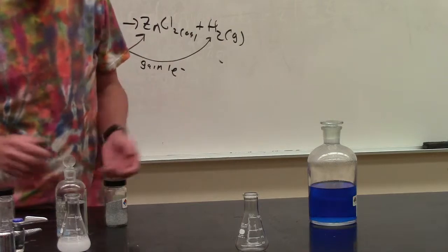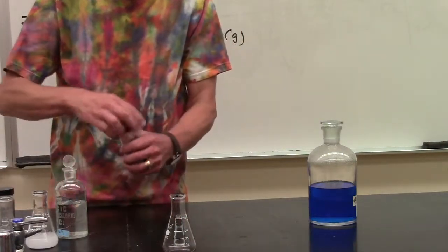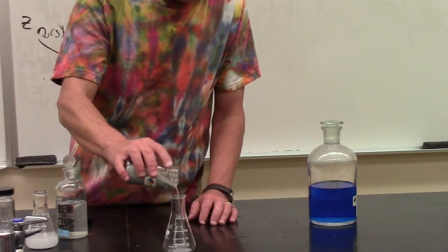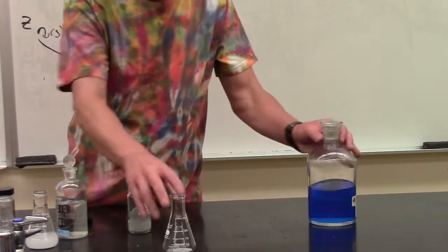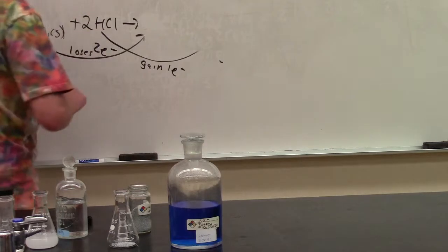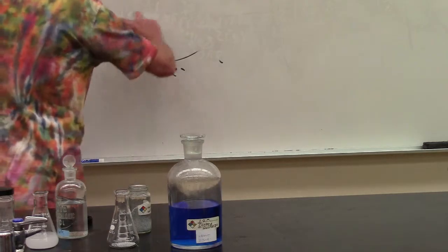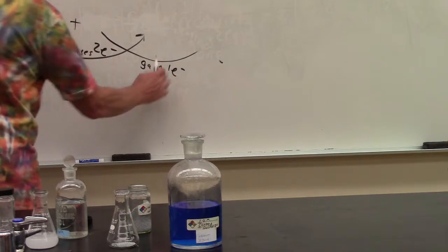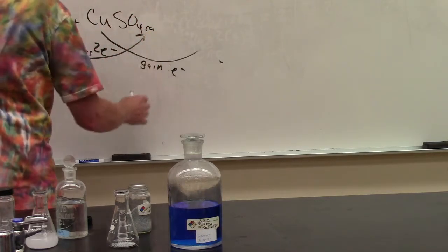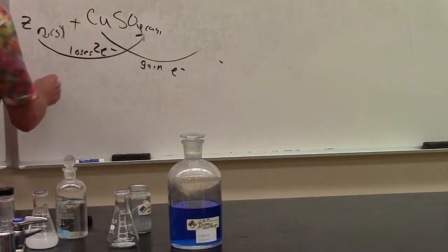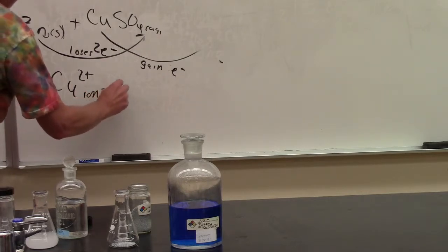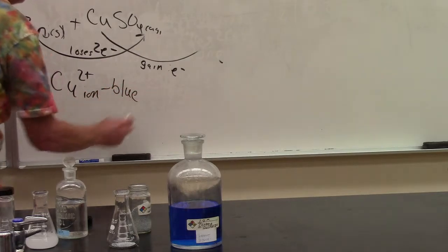Last but not least, we can actually have other reactions occur. So again, I am going to take some zinc solid. And in this case, I'm going to add copper sulfate. Now, copper sulfate is very blue. And in copper sulfate, we have the copper 2+ ion, which causes the blue color.